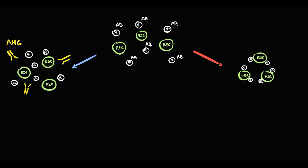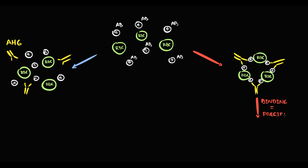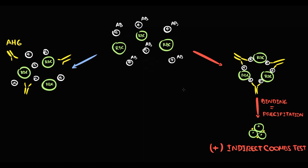So in the first case, anti-human globulin won't interact with red blood cells and antibodies. But in the second case, because antibodies are located on the surface of red blood cells, anti-human globulin binds to those antibodies, and as a result, agglutination of red blood cells occurs. With agglutination, they precipitate, and agglutination of red blood cells in the presence of anti-human globulin is considered a positive indirect Coombs test.